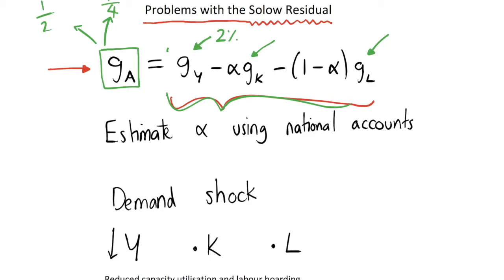We can estimate our growth in labor supply using fertility and death rate figures and so on, and then what we want to estimate is alpha and 1-alpha, our income share for each of these primary factors of production, and we do this using the national accounts.